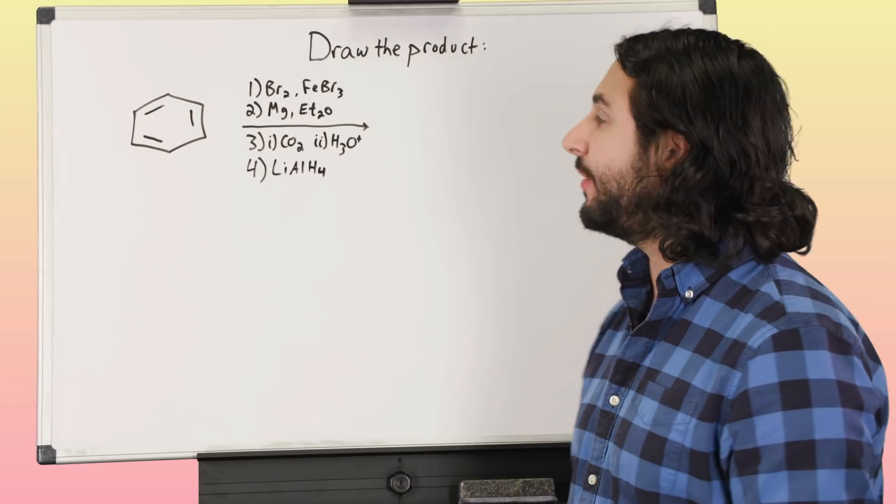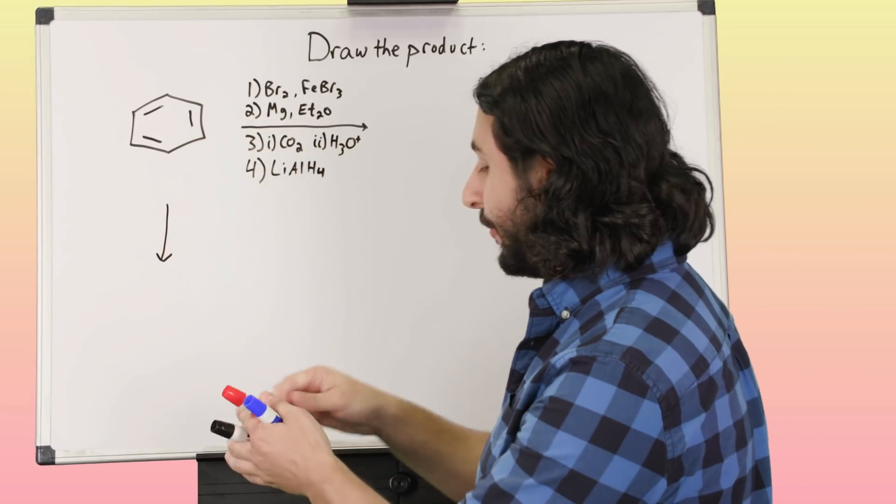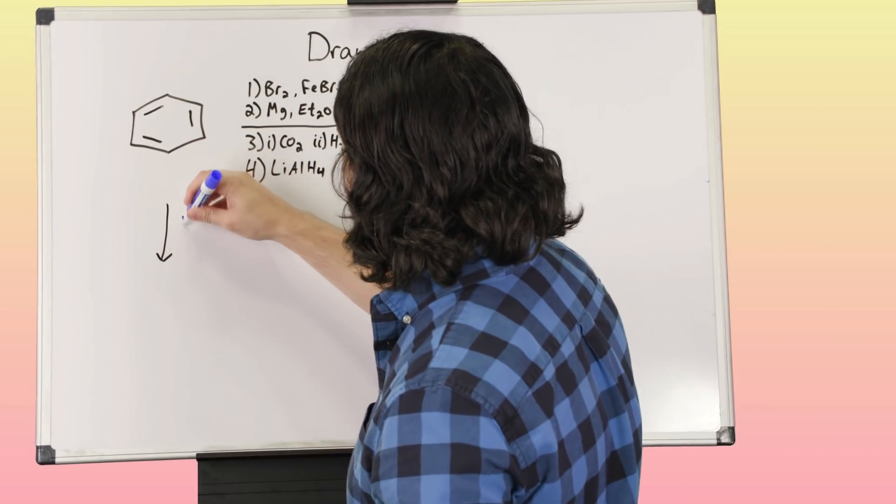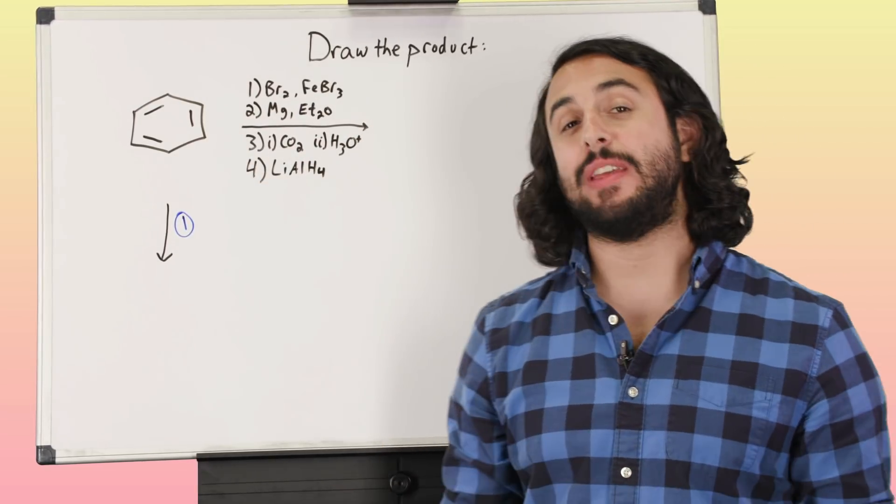So let's take a look at this. We've got benzene, we're starting with benzene, and what is the first thing we're going to do? Reaction one, we've got Br2 and FeBr3.